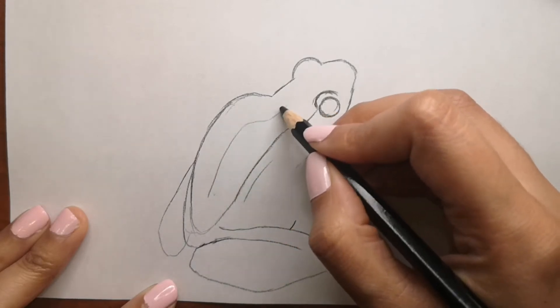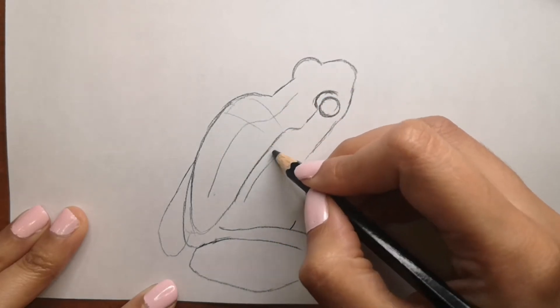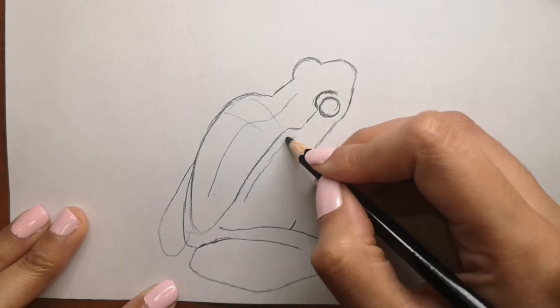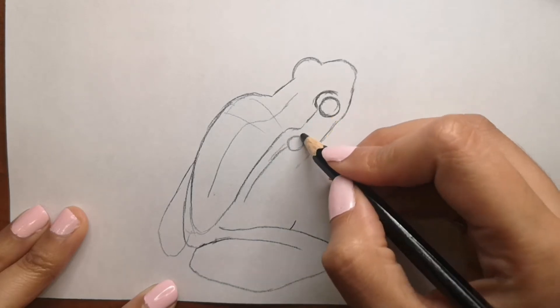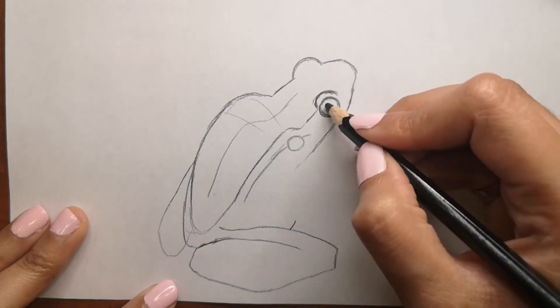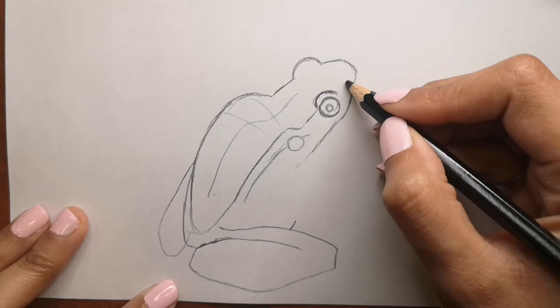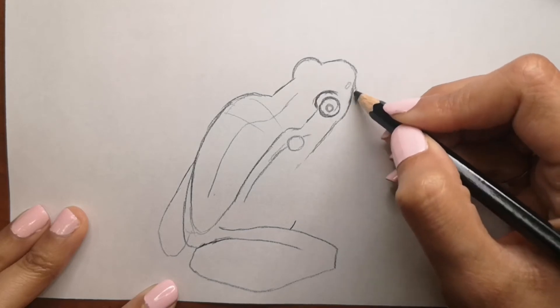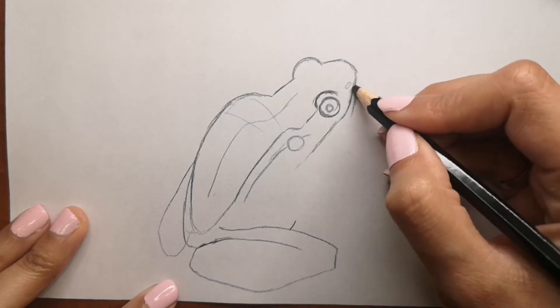They come in so many different colors as well. Last time when I drew a frog I kind of colored it blue. This one is going to be green and I'll add a little touches of yellow as well.